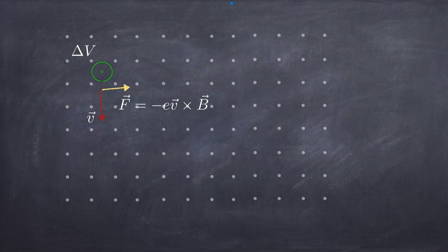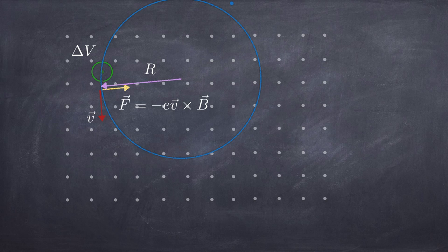The circular trajectory arises because the velocity and the force are always perpendicular to one another. Since the force is perpendicular, it doesn't do any work — the velocity remains constant in magnitude, the speed is constant, and the force remains constant in magnitude but always perpendicular to the velocity vector, resulting in circular motion. The radius of curvature is determined by the magnetic field strength, the charge, the mass, and the velocity.